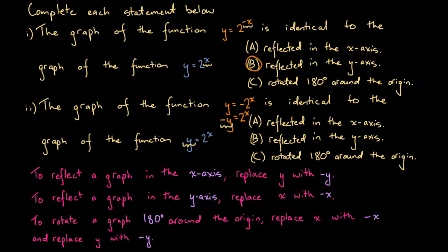So here y has been replaced with minus y, and x has not been replaced with minus x — this is the only change. Note that multiplying both sides by minus 1 is sometimes a good way to figure out which axis a function has been reflected in. When we replace y with minus y, it reflects the graph in the x-axis. So the graph of y equals negative 2 to the x is identical to the graph of y equals 2 to the power of x reflected in the x-axis — answer a.